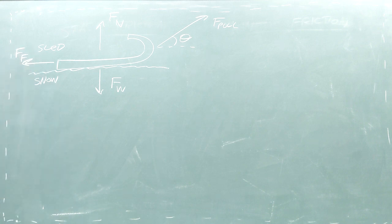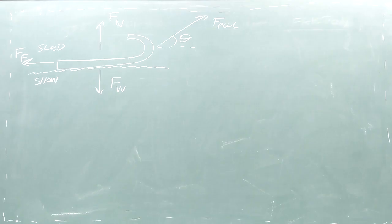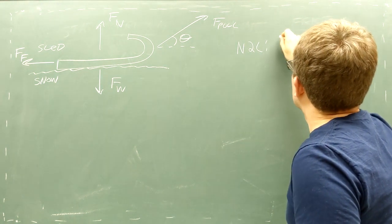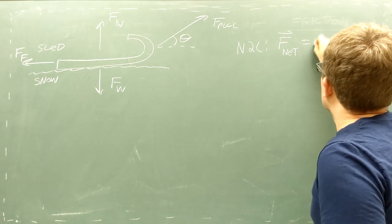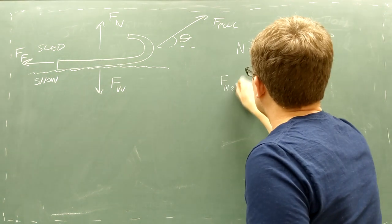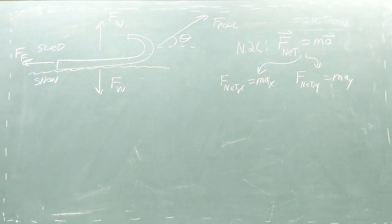Once we draw this free body diagram with these four forces we're ready to apply Newton's second law. Newton's second law says that the total of all the force vectors on the sled is equal to the sled's acceleration vector multiplied by its mass. Since these forces act in the x and y directions, we'll need to apply Newton's second law once in the x direction and once in the y direction.